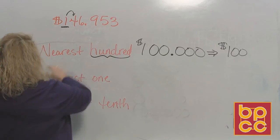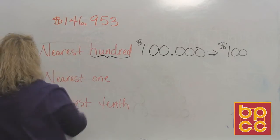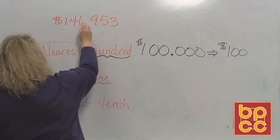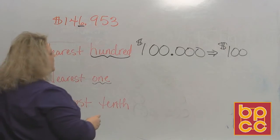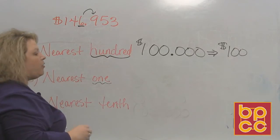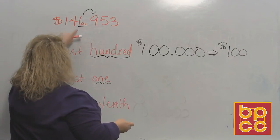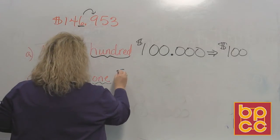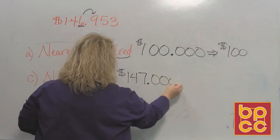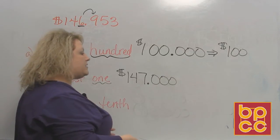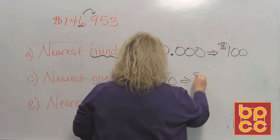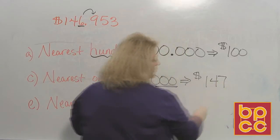Next, round to the nearest one — meaning the nearest dollar. We underline the digit in the one dollar place, which is the six, then look next door. It's a nine, which is five or more, so the six has to go up one. That gives us $147. Everything behind the number becomes a zero, but you don't have to write those zeros — you can just leave it as $147.